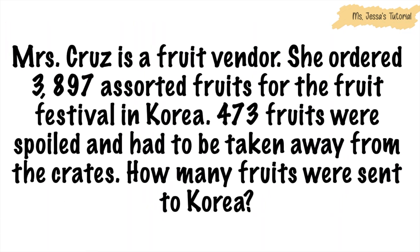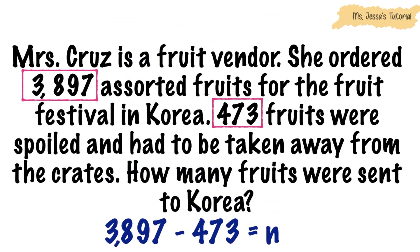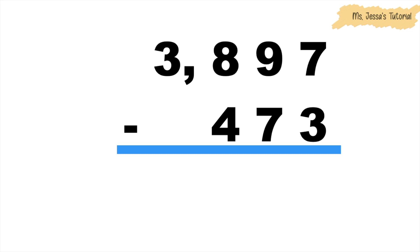Mrs. Cruz is a fruit vendor. She ordered 3,897 assorted fruits for the fruit festival in Korea. 473 fruits were spoiled and had to be taken away from the crates. How many fruits were sent to Korea? To solve this problem, we must subtract 3,897 and 473. We will have 3,897 minus 473 is equal to N. Always remember, children, in subtracting numbers, we must align the numbers according to their place value. We're going to start subtracting from the ones place.